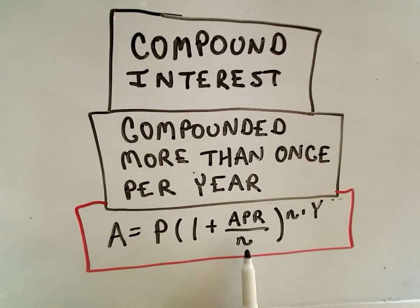It says you take your APR, divide it by N, add that to 1. N represents the number of compoundings per year. And Y is going to represent the number of years.